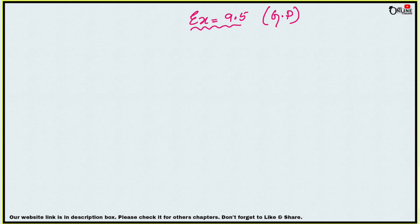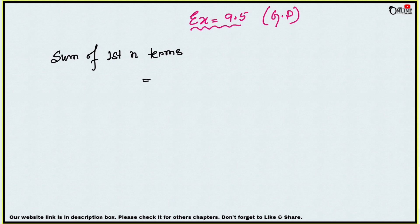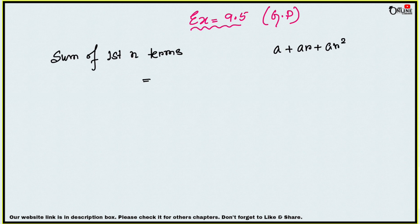In this exercise we are going to learn how to find the sum of the first n terms of a GP series. I hope all of you know about GP series. If you want to know what a GP series is, you can watch my previous video on Exercise 9.4, the link of which is in the description box. The first term of a GP is a, the second term is ar, the third term is ar², up to ar^(n-1).